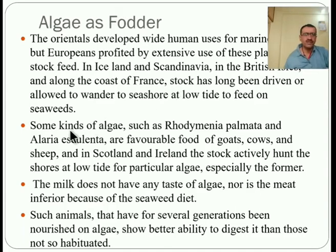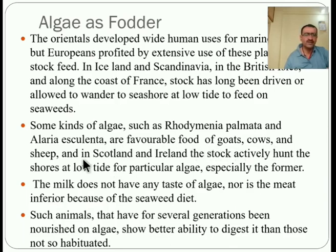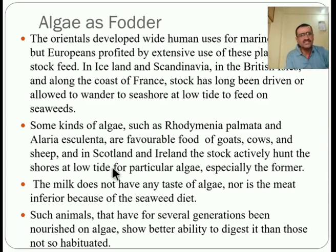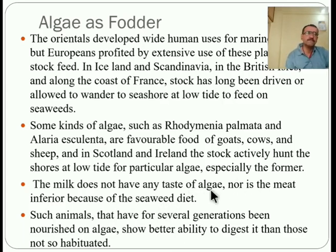Some kinds of algae such as Rhodymenia palmata and Alaria esculenta are favorable food for goats, cows, and sheep. In Scotland and Ireland, stock actively hunt the shore at low tide for particular algae. The milk of such animals does not have any taste of algae, nor is the meat inferior because of the seaweed diet.